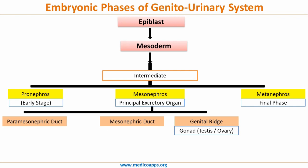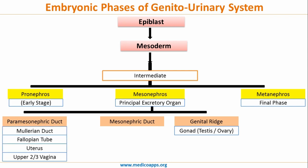The paramesonephric duct, also called the Mullerian duct, gives rise to the female reproductive system — namely the fallopian tube, uterus, and upper two-thirds of the vagina. Two important points frequently asked in PG exams: Number one, the paramesonephric ducts mostly degenerate in males. Number two, the lower one-third of the vagina develops from the sinovaginal bulb, derived from the urogenital sinus, and is therefore endodermal in origin. So the upper two-thirds are mesodermal in origin, and the lower one-third is endodermal in origin.